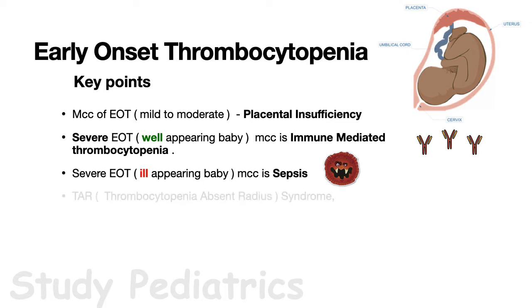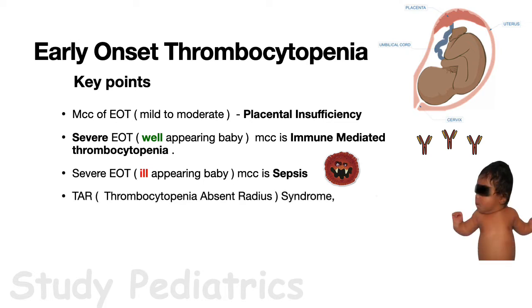Other causes of EOT include TAR, that is thrombocytopenia with absent radius. If a neonate presents with radial abnormalities but a normal-appearing thumb along with thrombocytopenia, suspect TAR syndrome. The platelet count is usually below 50,000 and WBC count may be more than 1 lakh, mimicking leukemia. Infants who survive more than 1 year generally do well as platelet count spontaneously improves to low-normal and is maintained throughout life.